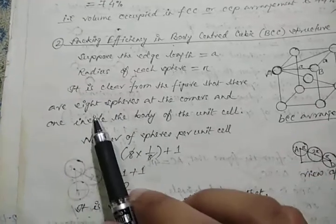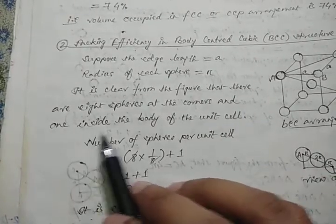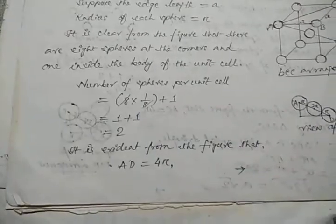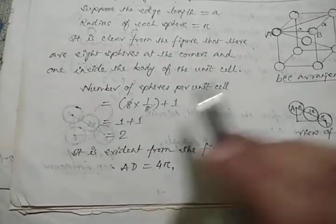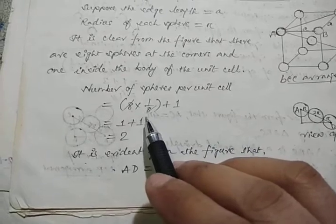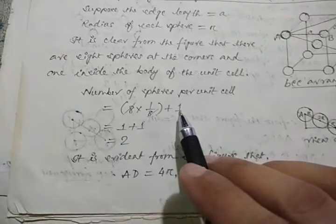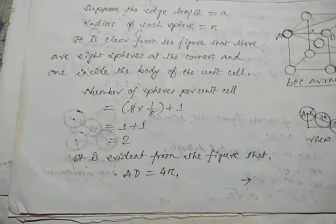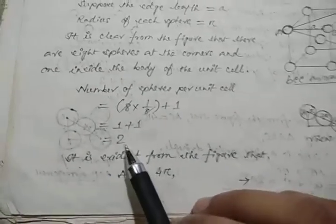It is clear from the figure that there are eight spheres at the corners and one inside the body of the unit cell. The total number of particles: eight corners contribute one-eighth each, plus one in center, equals two particles in BCC.